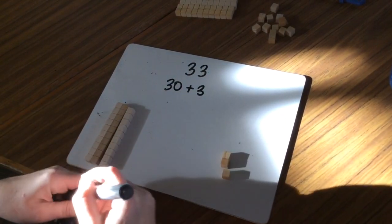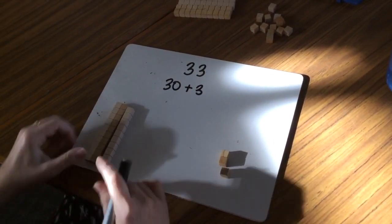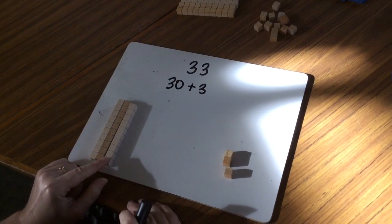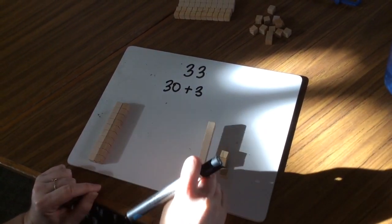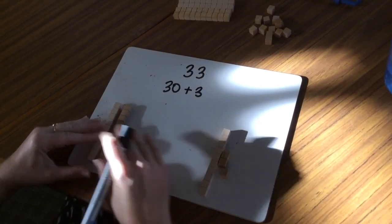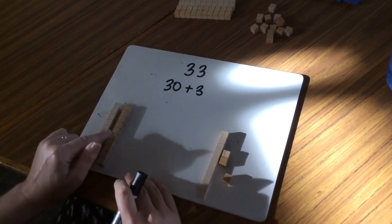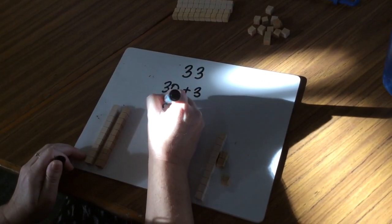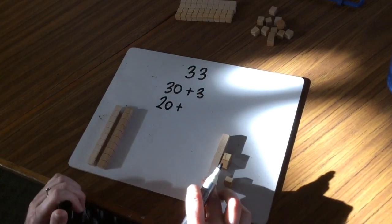Now I want to look at breaking it up in a non-standard form, so I'm going to move one of my tens to join the ones, and I'm going to write down my number sentence: 10, 20 plus 10, 11, 12, 13.